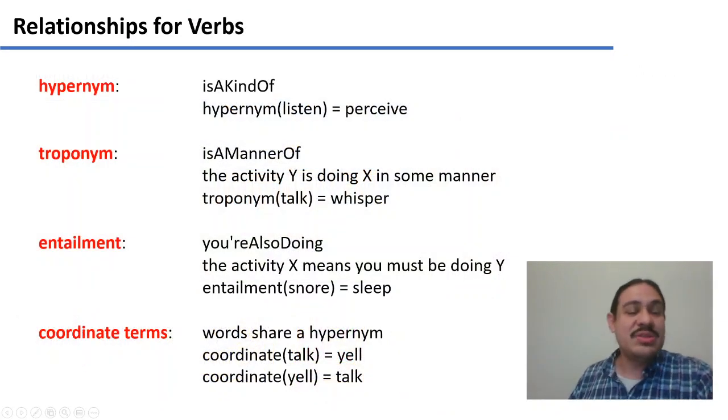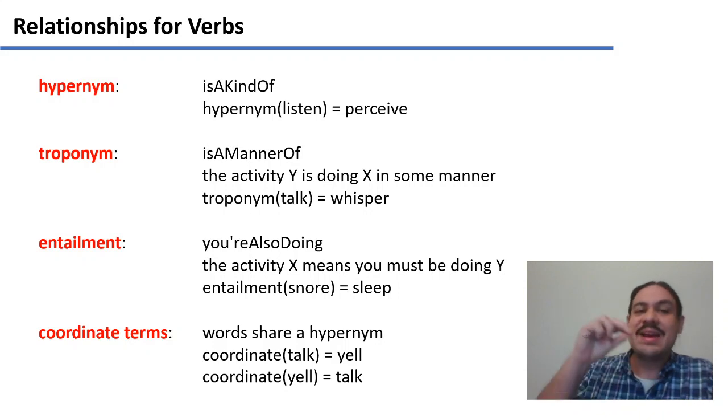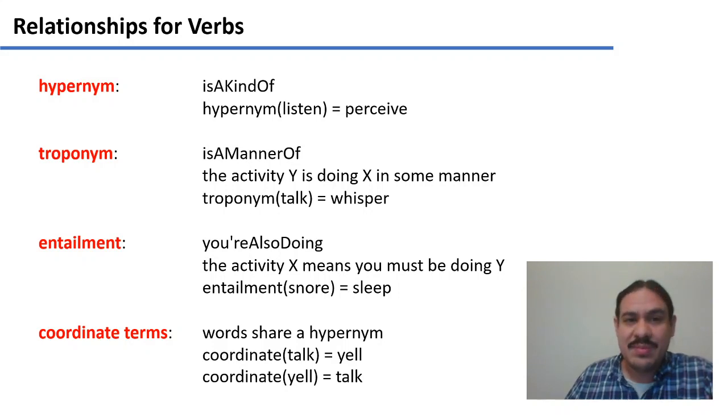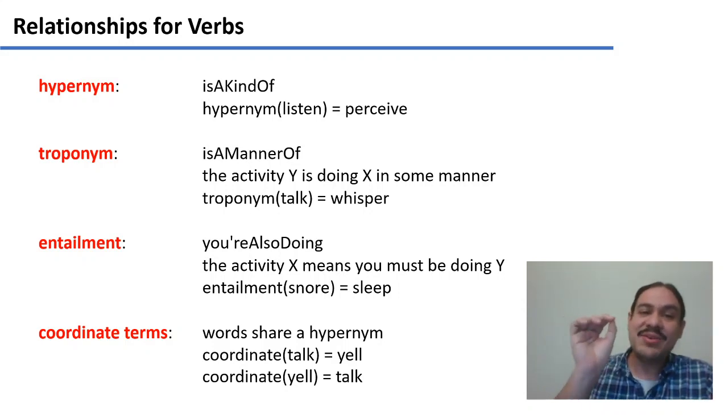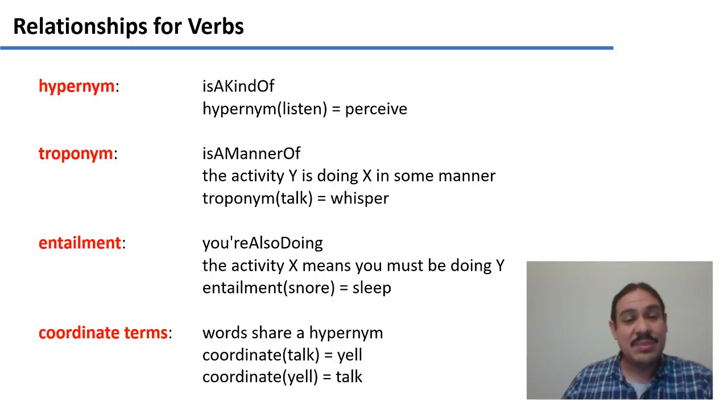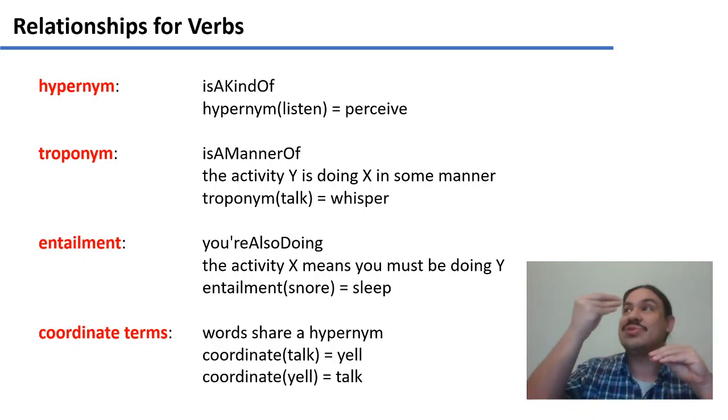Let's look at some relationships for verbs. Verbs also have hypernyms. So, listening is a kind of perceiving. They have a few relationships that are unique to verbs. For example, a troponym, which is a manner of doing something else. So, whispering is a manner of talking. Entailment means that if you're doing something, you're also doing something else. If you're snoring, you're also sleeping, for example.